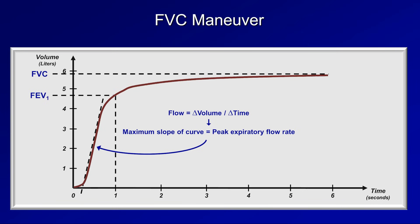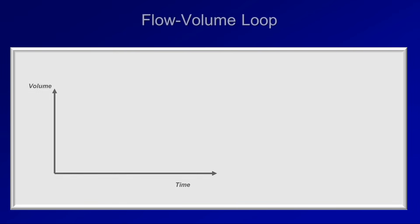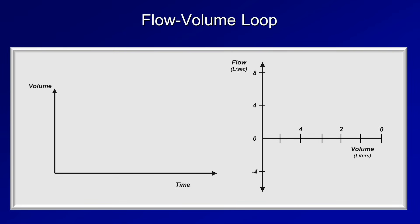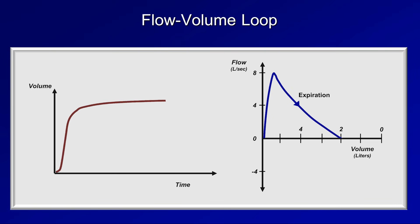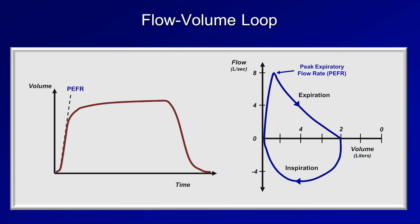The flow-volume loop is a graph of airflow as a function of volume. During expiration, there is an initial quick peak airflow and then a gradual reduction in flow until it reaches zero. The inspiratory half of the flow-volume loop is much more symmetric. The maximum slope of the volume-time graph corresponds to the peak expiratory flow rate, which is the same as the maximum point on the flow-volume loop. The volume at the transition from maximum inspiration to expiration equals the total lung capacity.